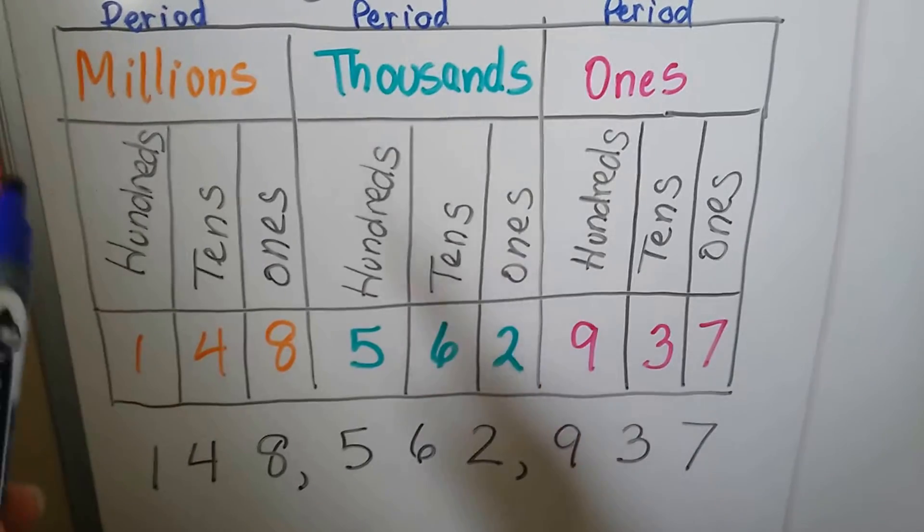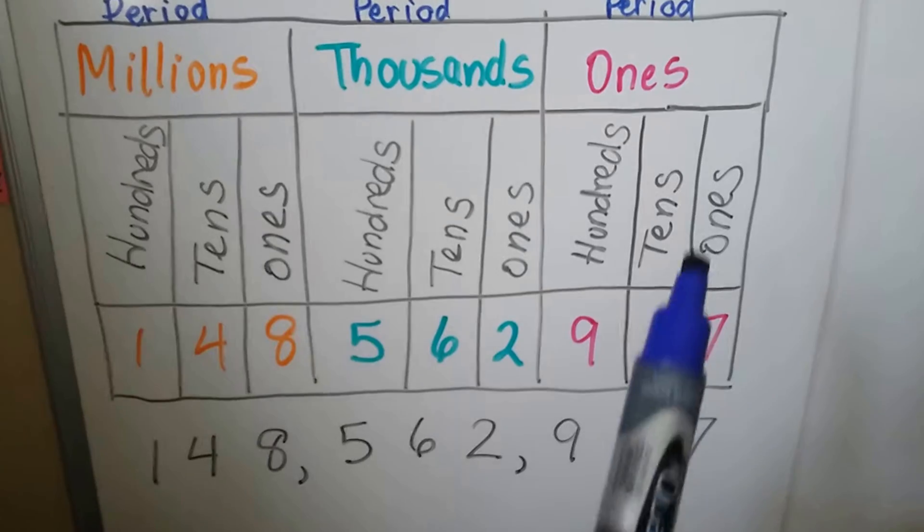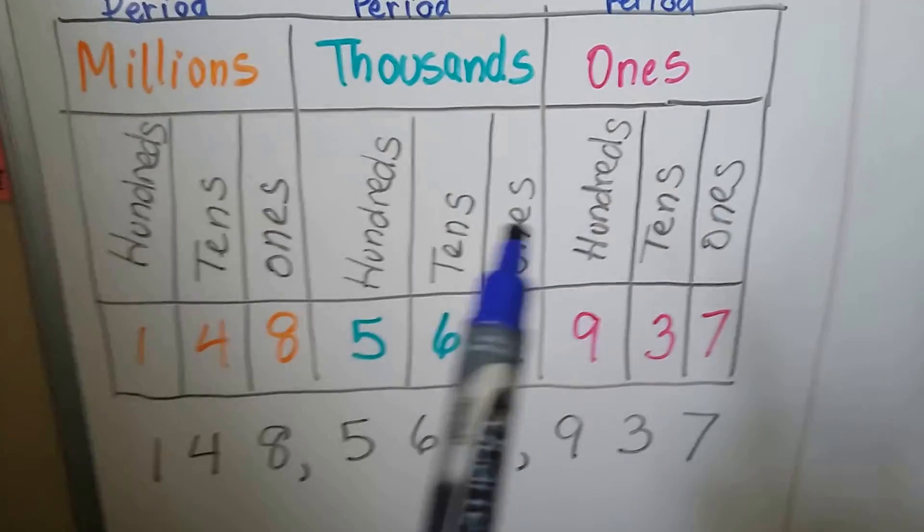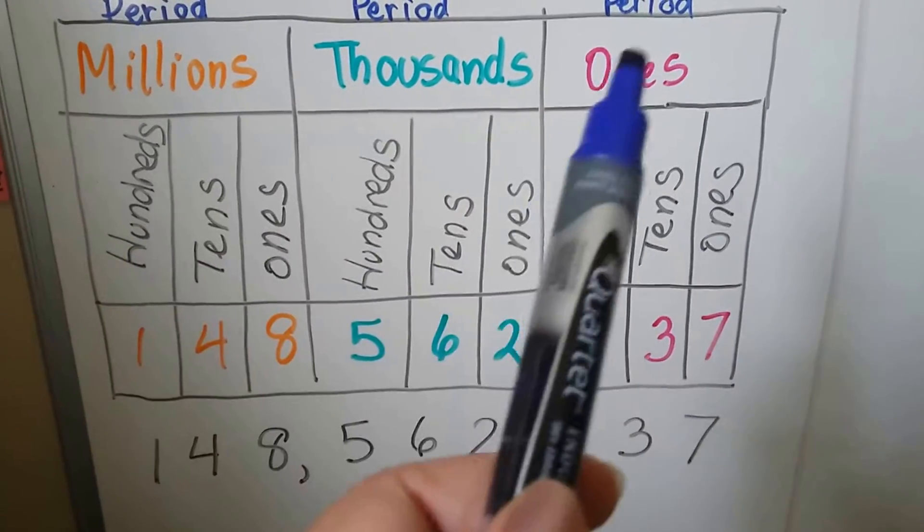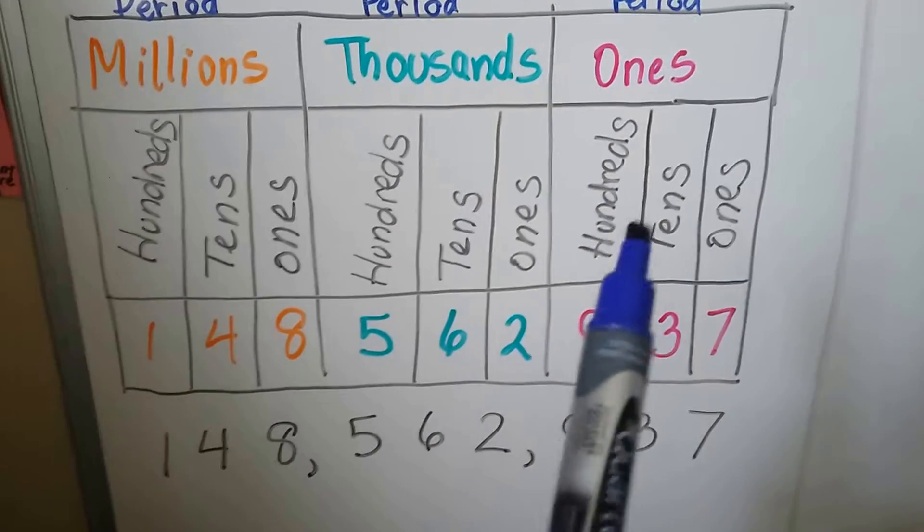And we could go on to billions and the next place values. If you notice, they each have a ones, tens, hundreds. Each period is broken into ones, tens, and hundreds.